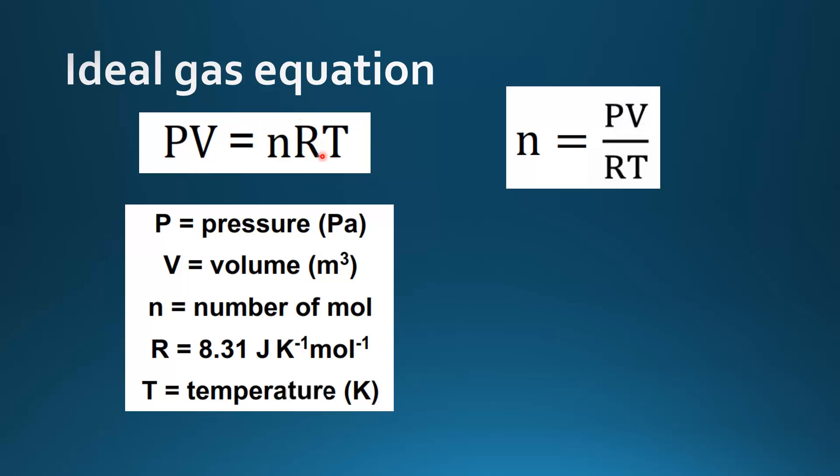The ideal gas equation can be rearranged to solve for n, number of moles. So number of moles is equal to PV divided by RT.